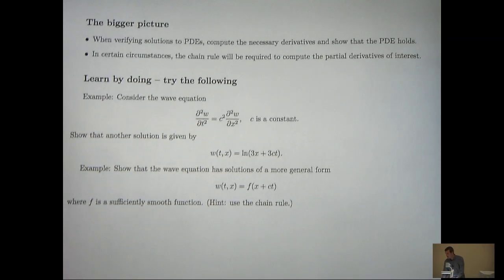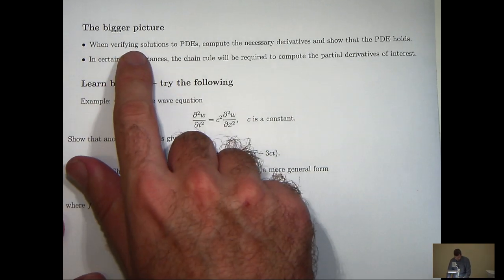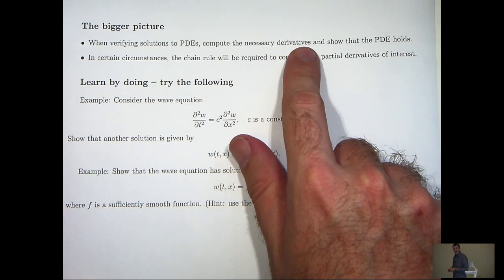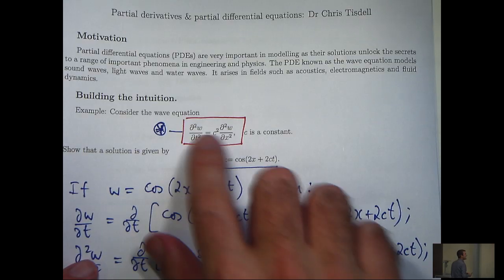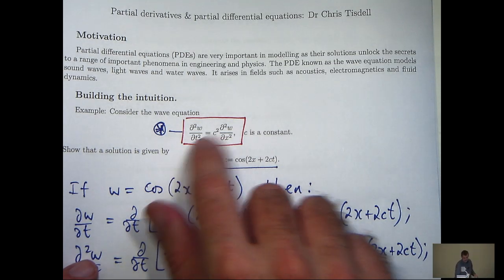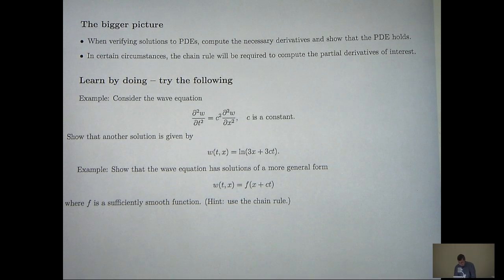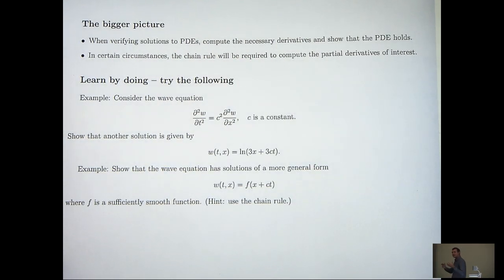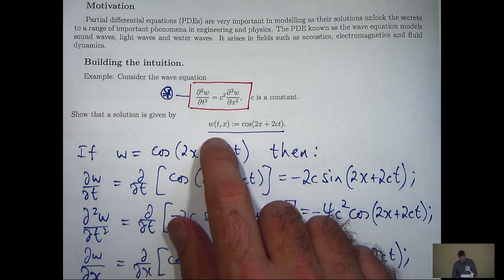Let's look at the bigger picture. When verifying particular functions are solutions to PDEs, compute the necessary derivatives that appear in the PDE and show that the PDE holds. Here we had two derivatives, we calculated both of those derivatives from the given function, and showed that the equation balanced. In certain circumstances, the chain rule will be required to compute the partial derivatives of interest.